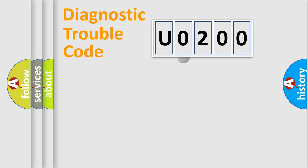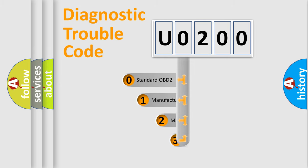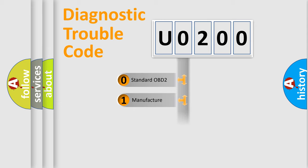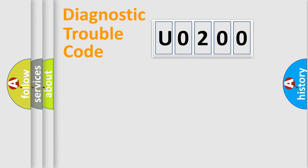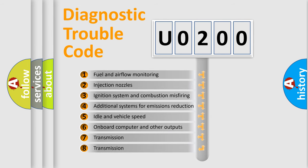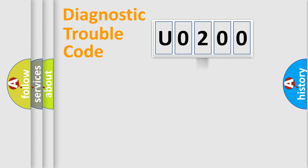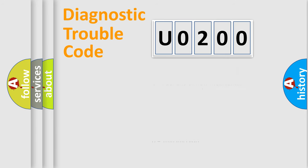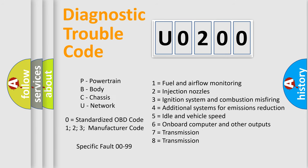This distribution is defined in the first character of the code. If the second character is expressed as zero, it is a standardized error. In the case of numbers 1, 2, or 3, it is a manufacturer-specific error. The third character specifies a subset of errors. This distribution is valid only for the standardized DTC code, and only the last two characters define the specific fault of the group.